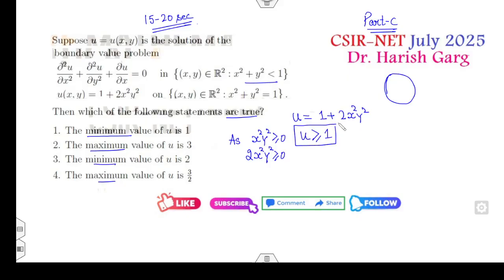Is it fine? Any doubt? Clear. So that means the minimum value will be 1 is the right answer. Minimum value 2 is wrong. I think there is no doubt up to here.